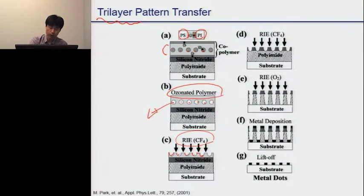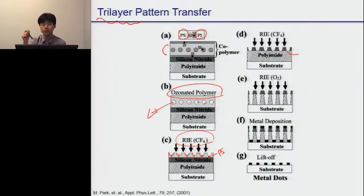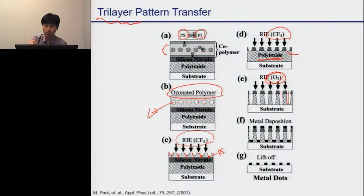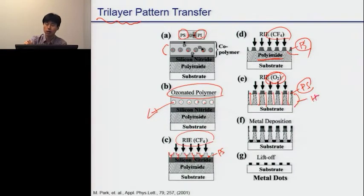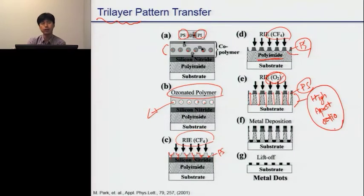As we further etch away the polystyrene, at some point the spot where the polyimide was located exposes the substrate much faster. At this point, there is another layer of polyimide below. We then change the plasma to oxygen plasma and etch it further. In this case, we use the polystyrene as an etch mask, and we can just etch it further and achieve this kind of high aspect ratio pattern.